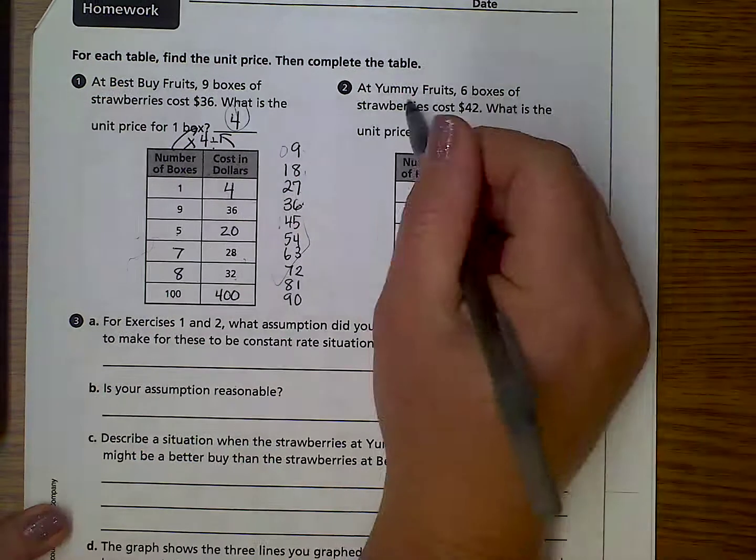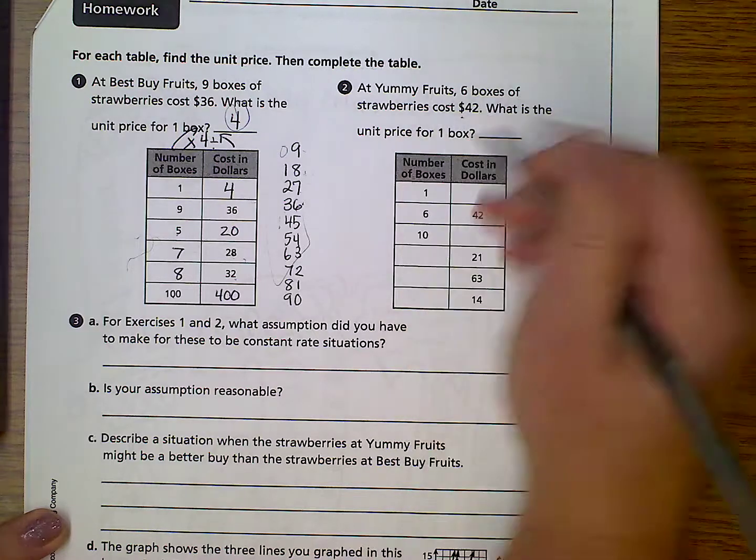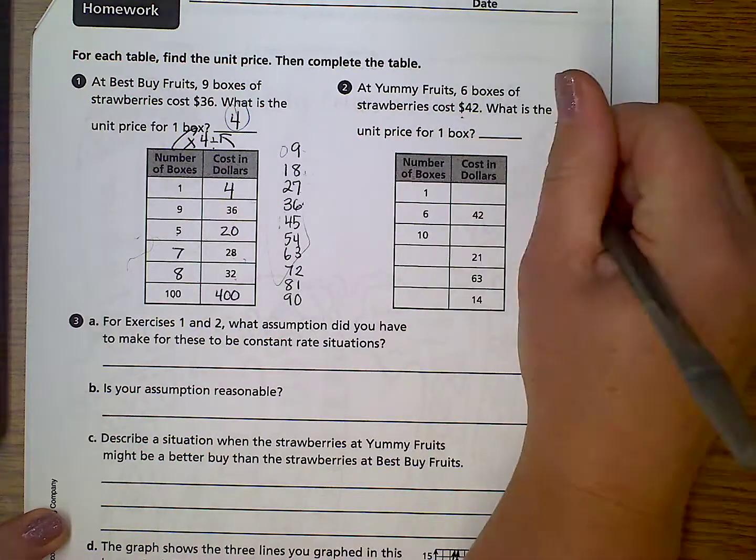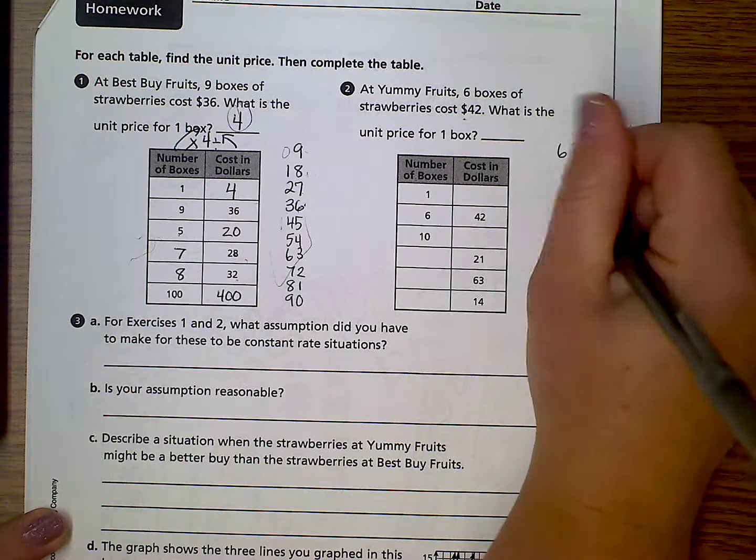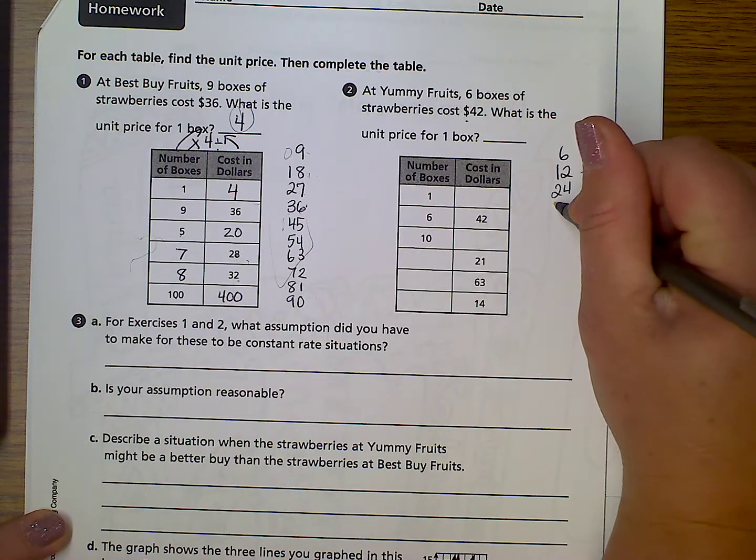Sorry. At Yummy Fruits, 6 boxes of strawberries cost $42. What is the unit price for one box? So to figure out the unit price, we can count by 6s. 6, 12, 24. And this is the one we were talking about.